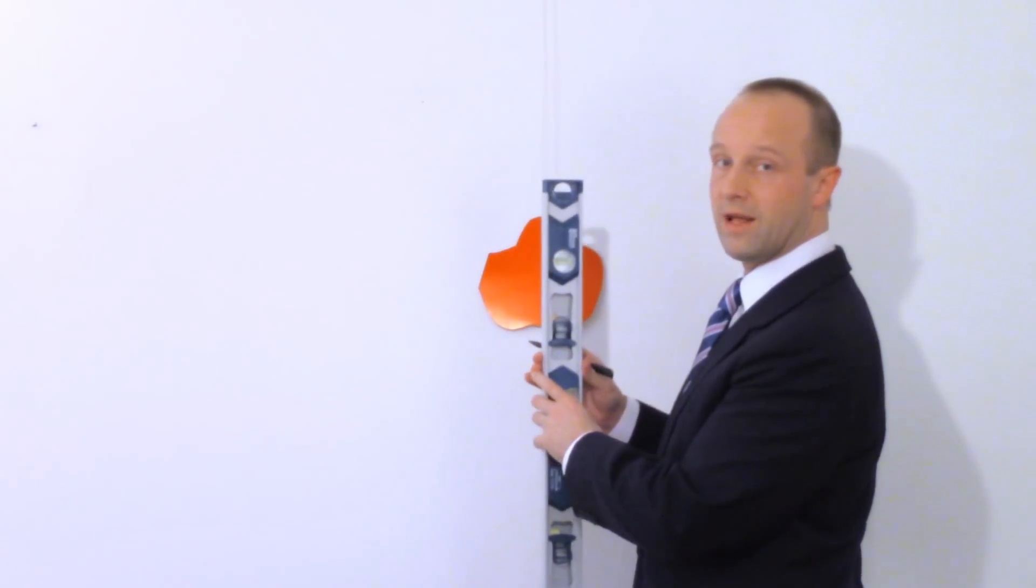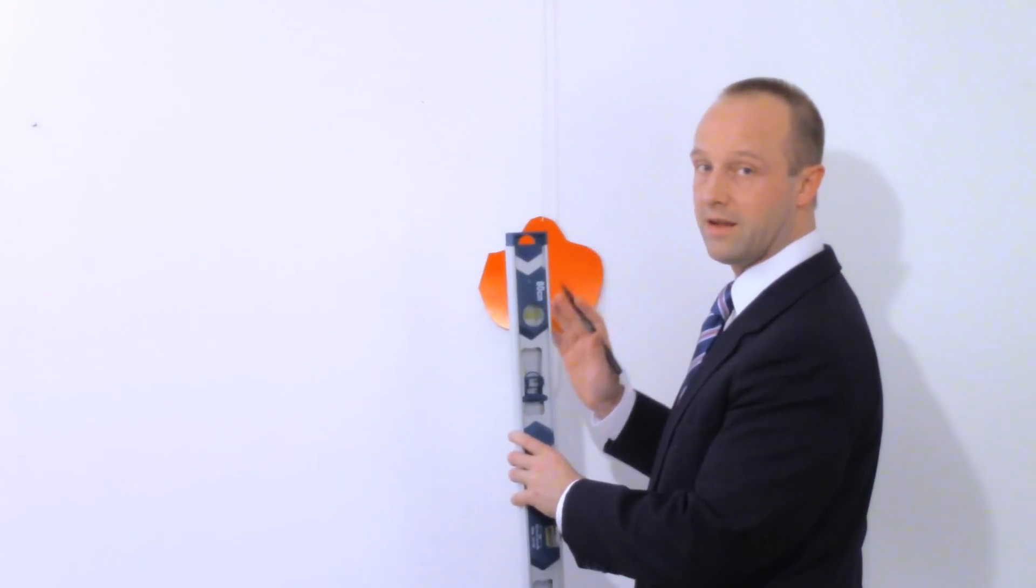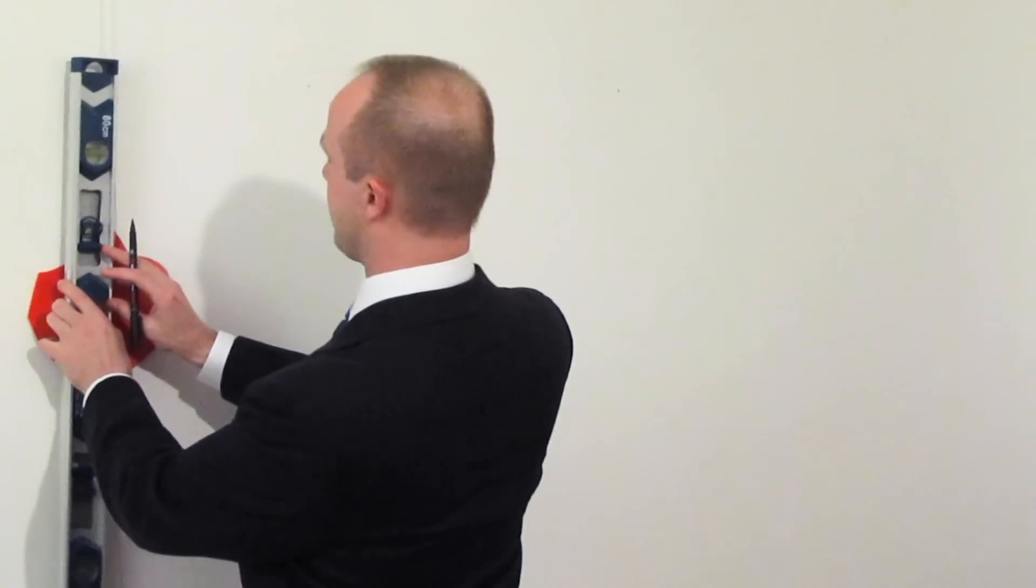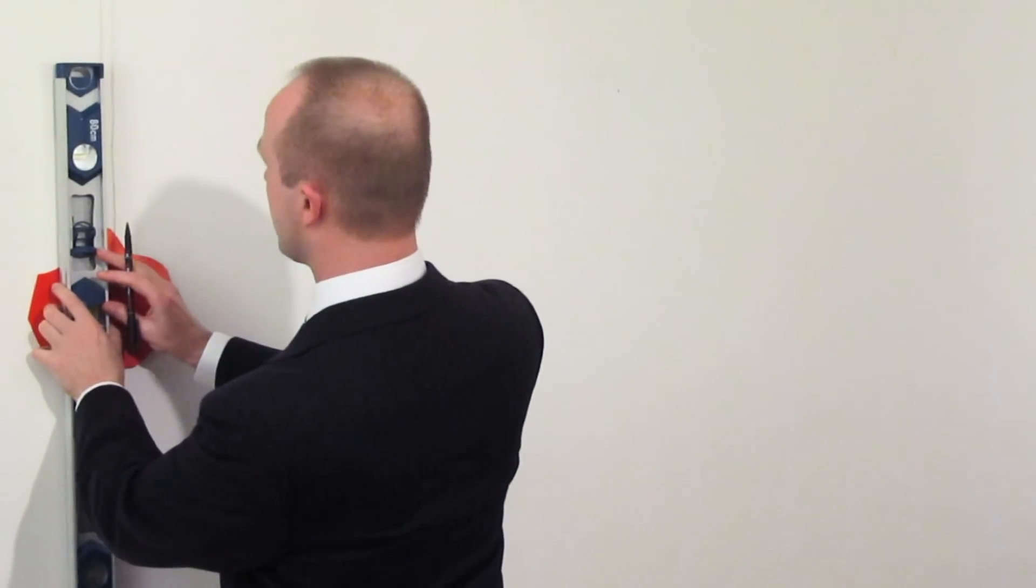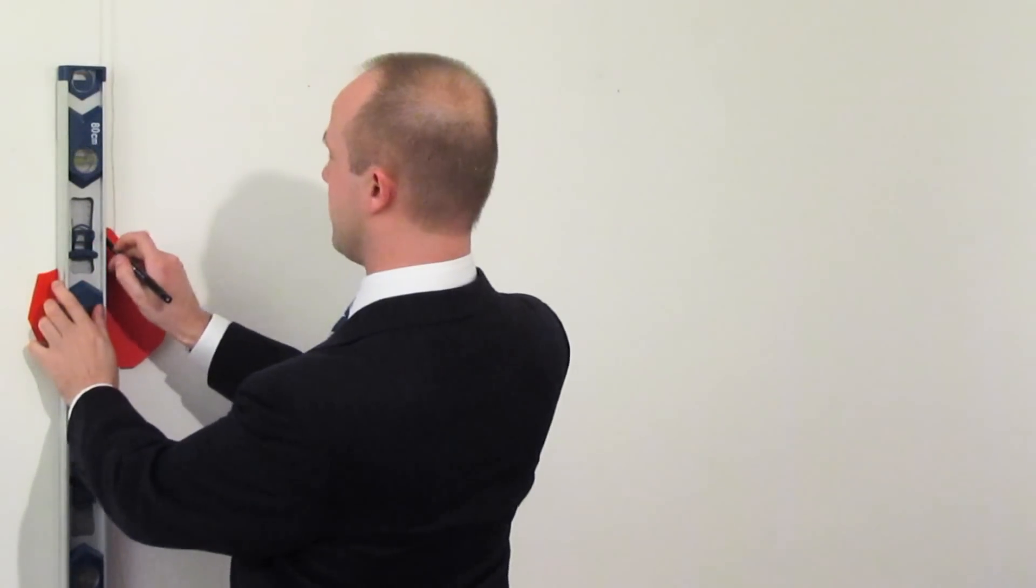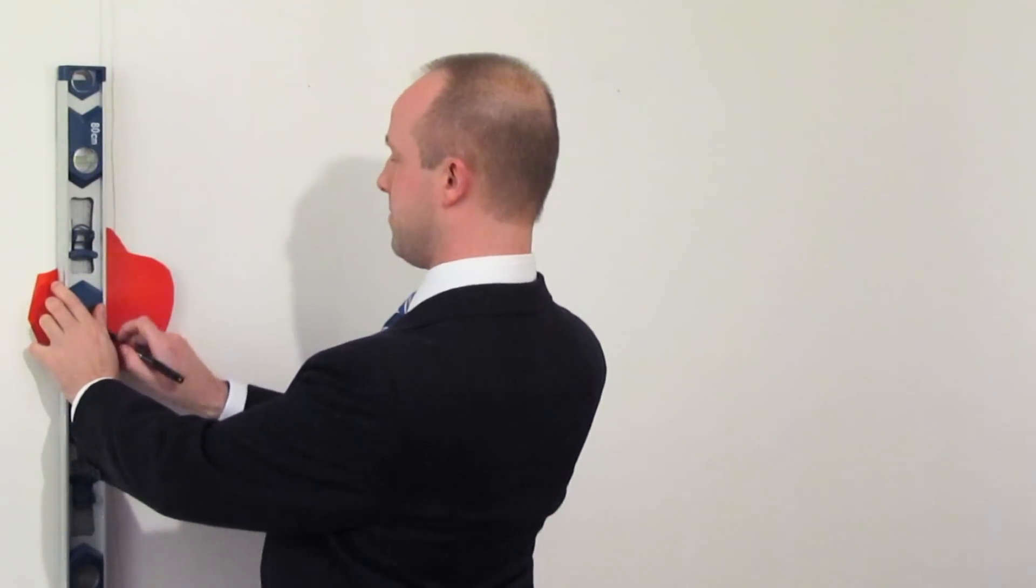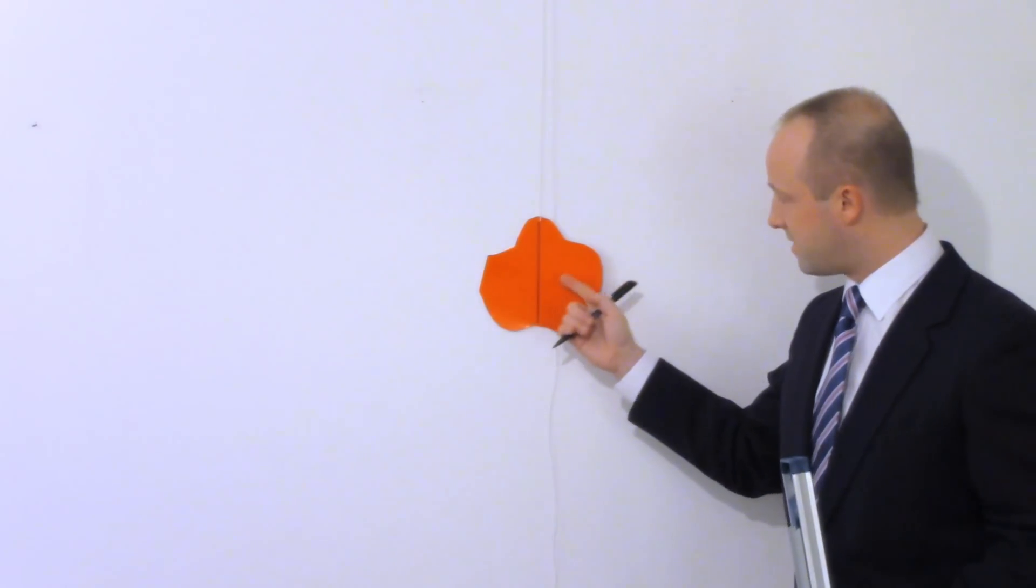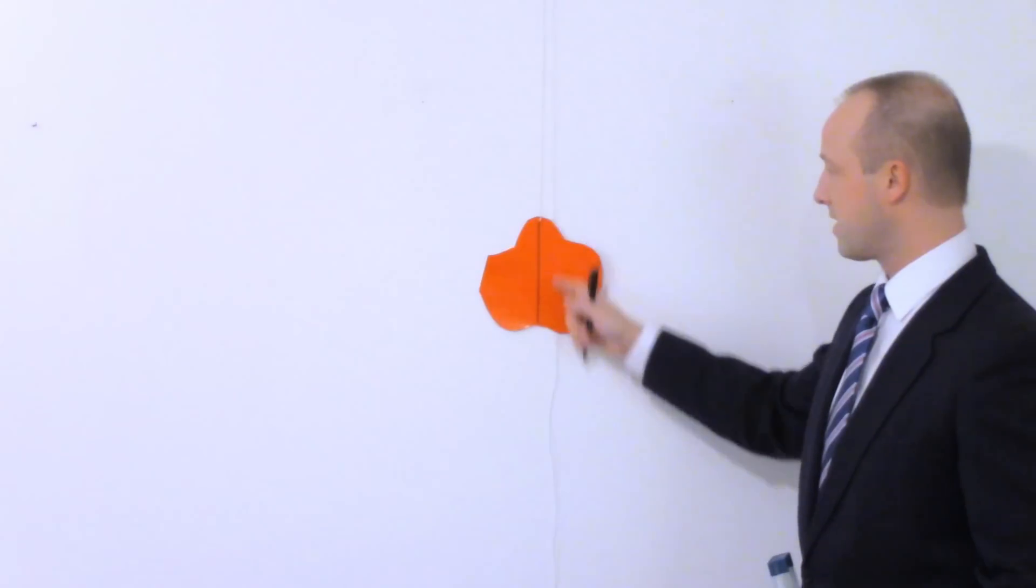Let me grab my ruler. This ruler has a spirit level in it so I can make sure the line I'm drawing is perfectly vertical. The centre of mass must be somewhere on this line here. This line must contain the centre of mass.